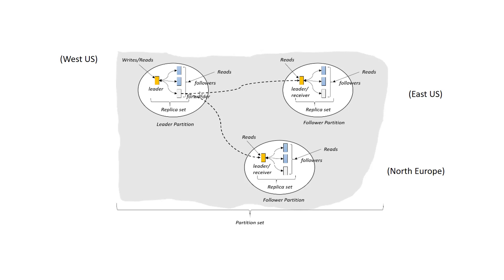Anytime a write comes in, replication within the region is going to be synchronous — the write will be replicated to a quorum of replicas within that region before acknowledging that write. Doing replication across geographic regions, these regions are going to be much further away, and as a result, when you're dealing with these high latencies and large geographic distances, what you'll want to do is replicate asynchronously, and while consistency is often desired, there are going to be very meaningful trade-offs. So let's take a look at what these trade-offs are.